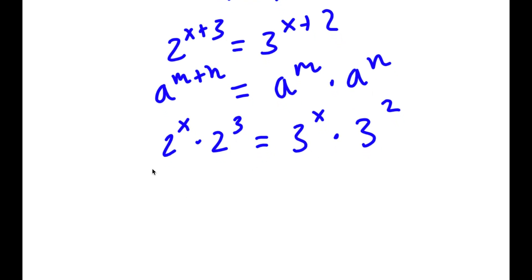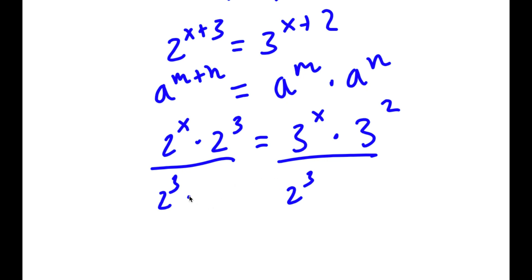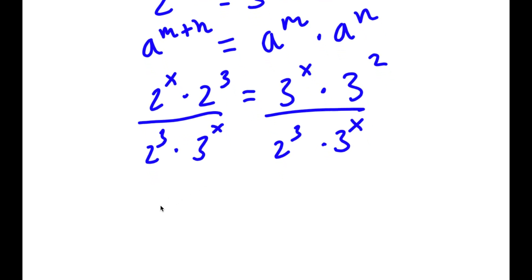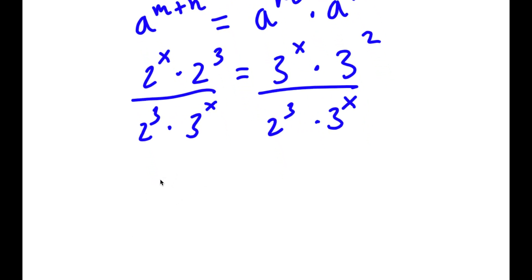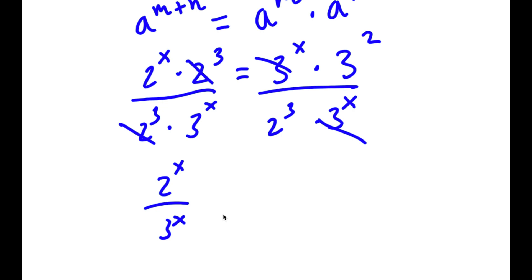Now I'm going to divide both sides by 2 to the power of 3 as well as 3 to the power of x. So now I have 2 to the power of x over 3 to the power of x, because these two cancel out. And for my right-hand side, these two cancel out so I'll have 3 squared over 2 to the power of 3.